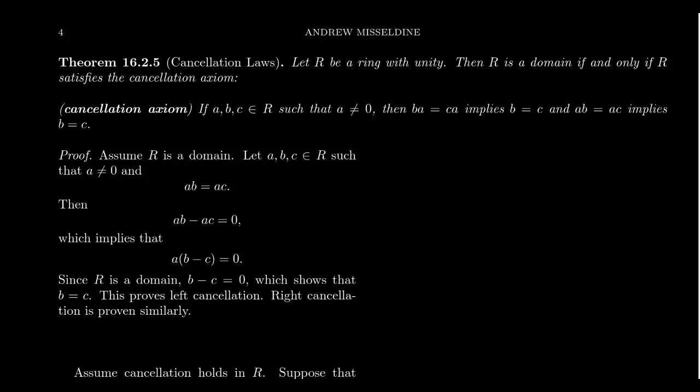Because this is a ring, we can move AC to the other side by subtraction: AB minus AC equals zero. There's a common divisor of A so we can factor it out, and we end up with A times (B minus C) equals zero. Now we have a product of things equal to zero.